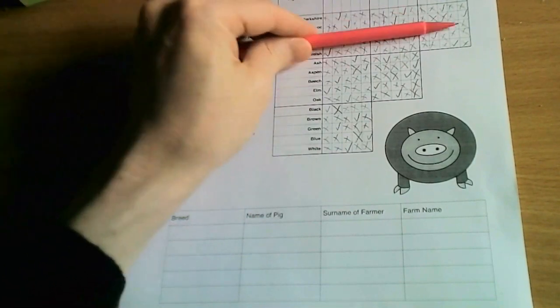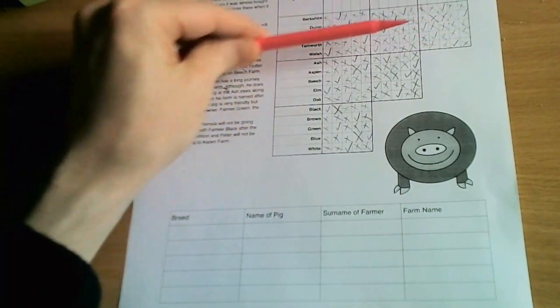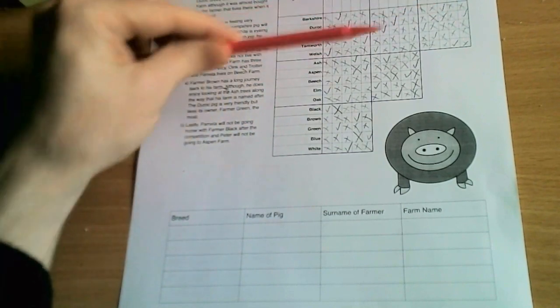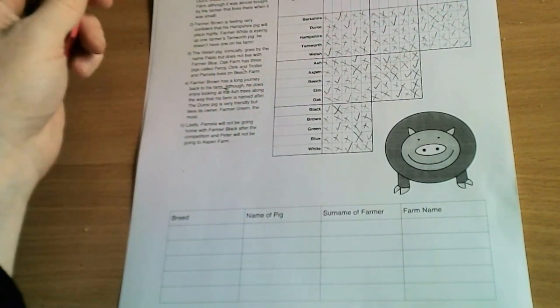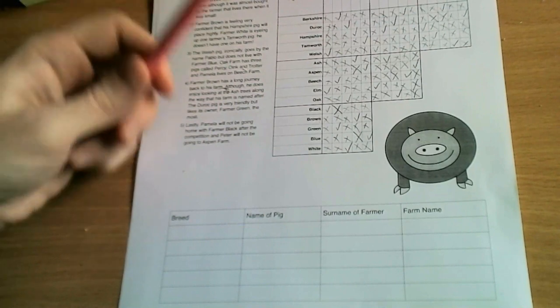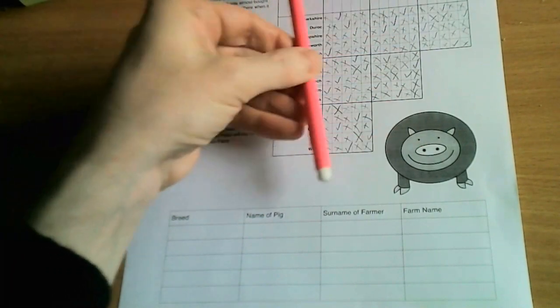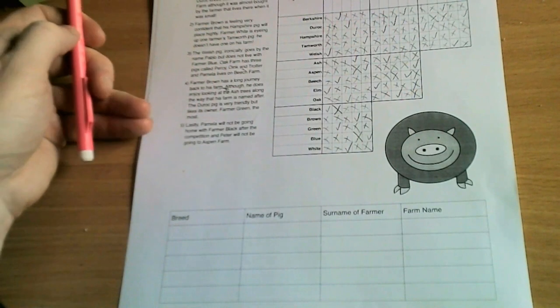And shows that actually, if you work through methodically, taking all the information you can from the clues and then using the table to help you see links between multiple pieces of information that can be used to help you make further deductions, then they do actually solve quite straightforwardly.